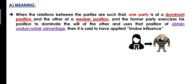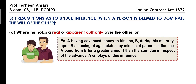Now let's understand the definition of undue influence. Jab do party mein se ek party dominant — yaane stronger position pe ho — aur doosri party thode weaker position pe ho, aur agar stronger position waali party apne position ka advantage lete hue apne fayde ke liye weaker position waali party se koi unfair ya undue advantage gain karti hai, then it is said that undue influence has been done.